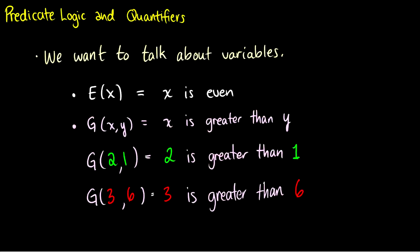So what is predicate logic for? We want to talk about variables. Before, we couldn't have a statement like 'x is even' and just plug something in for x — that wasn't possible in propositional logic. But in predicate logic it's now possible because our predicates also have terms. So a predicate looks like Ex, which is the predicate 'x is even'. Another example would be a two-place predicate Gxy, which could mean something like 'x is greater than y'. And these are variables.